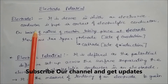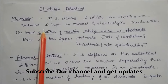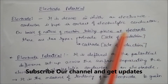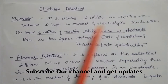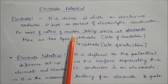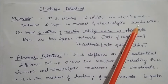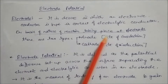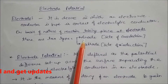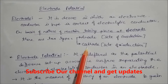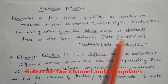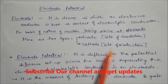The electronic conductor is a metal or non-metal, and it is kept in contact with the electrolytic conductor, which is a solution. Based on the nature of the reaction between the electrolytic and electronic conductors, there are two types of electrodes: anode, which is the site of oxidation, and cathode, which is the site of reduction.